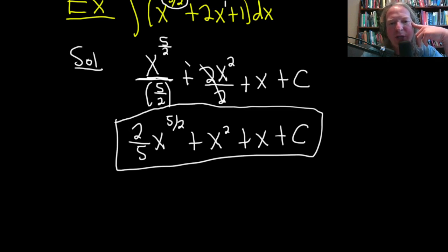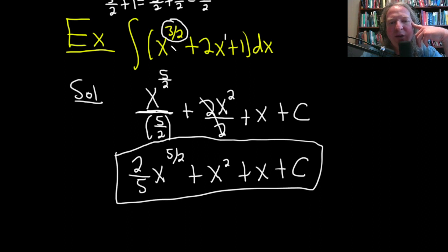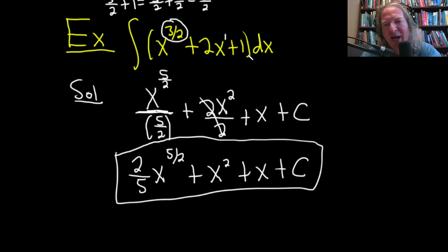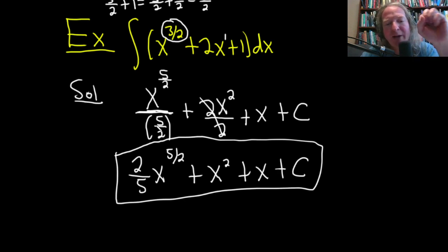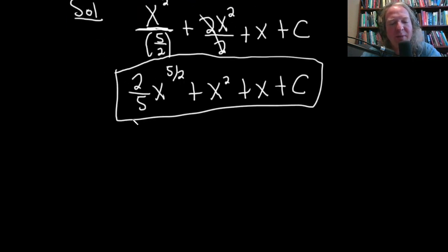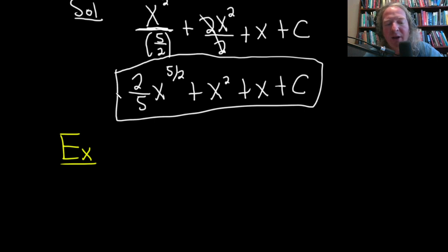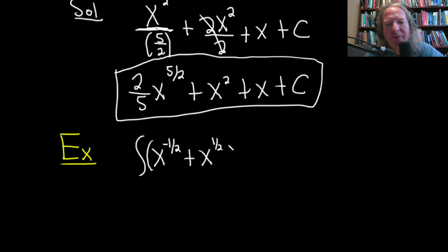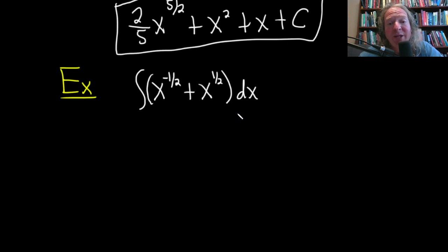Plus x and then plus our constant of integration, capital C — that's an acceptable final answer. To recap: 2/2 plus 3/2 is 5/2, divide by 5/2; 1 plus 1 is 2, divide by 2; a constant by itself gets x; plus C. Dividing by 5/2 means multiplying by the reciprocal. The best way to get good at integration is to do a bunch of integrals. Let's do another one — this time negative x to the 1/2 plus x to the 1/2 dx.